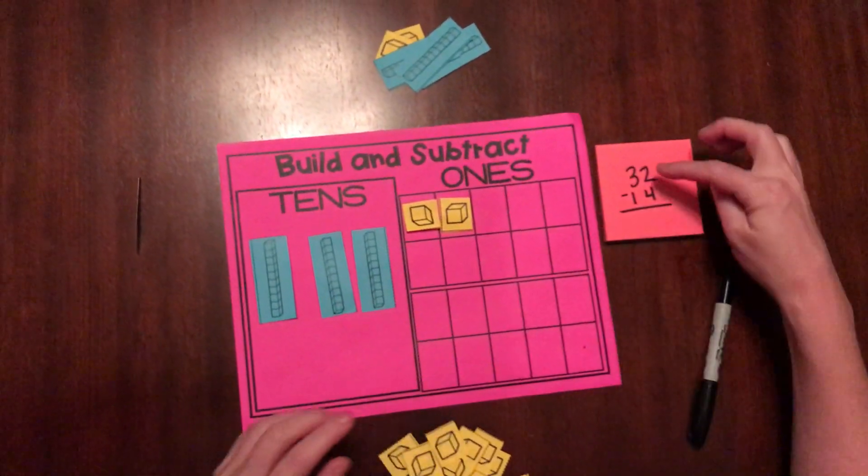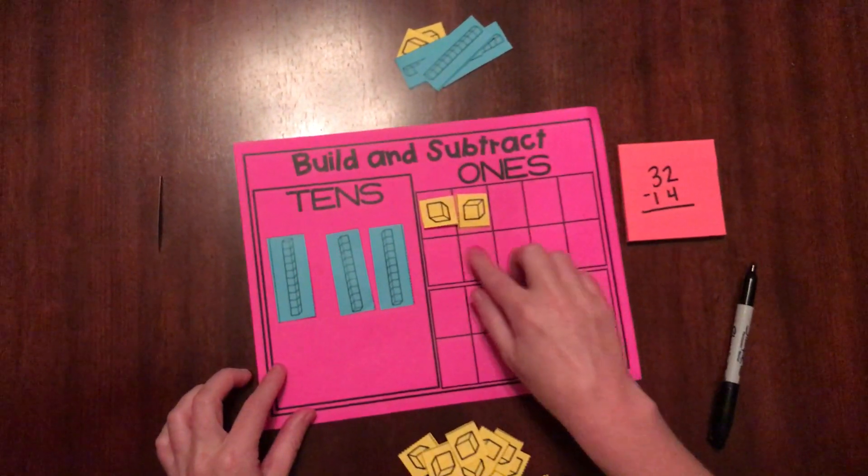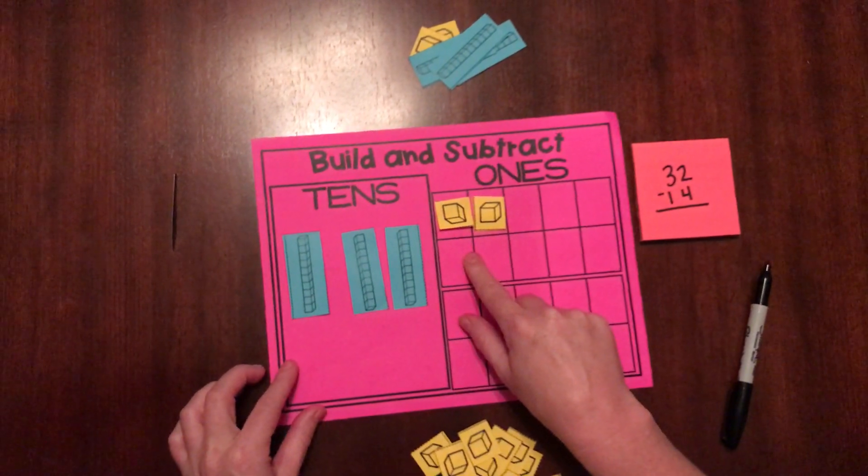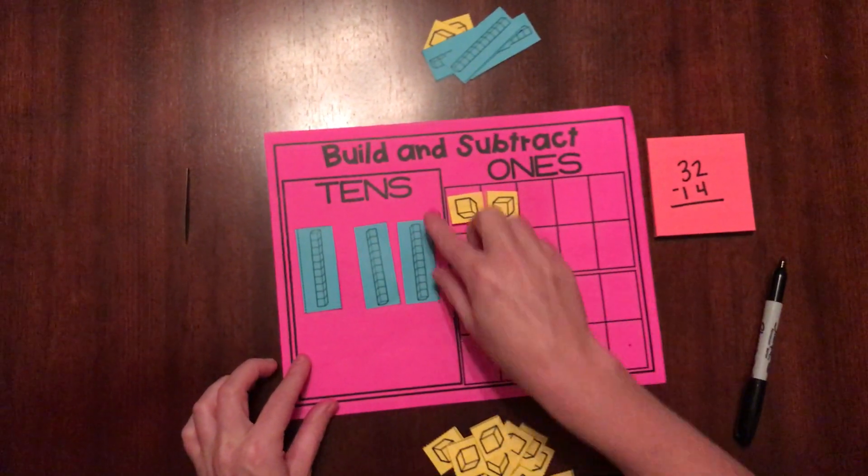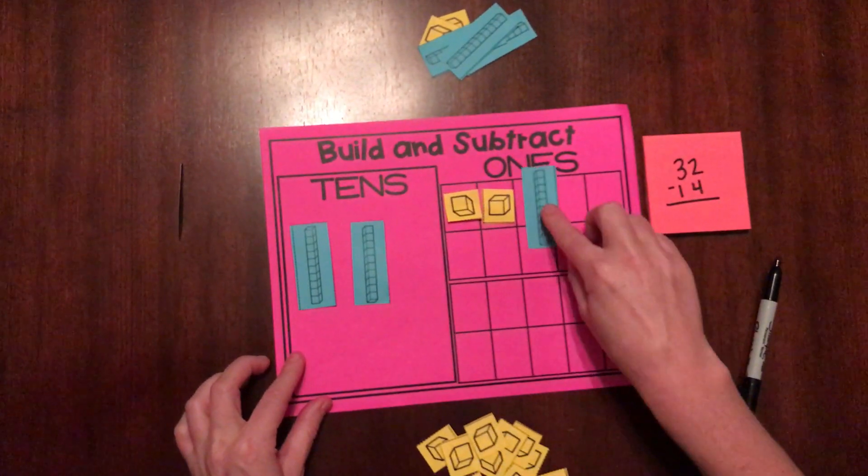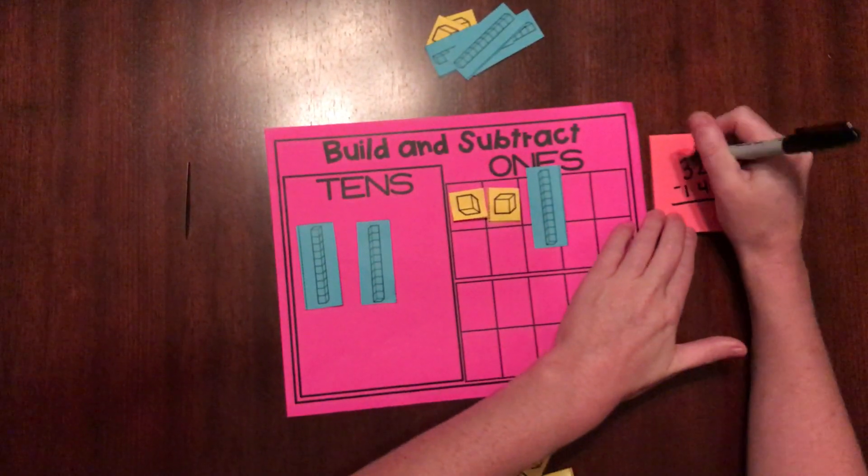I always start in my ones place. I have two take away four. I have two ones. Can I take four away? No, I can't. So I'm going to go to my tens place and borrow a ten and move it next door, just like you would see on a problem.